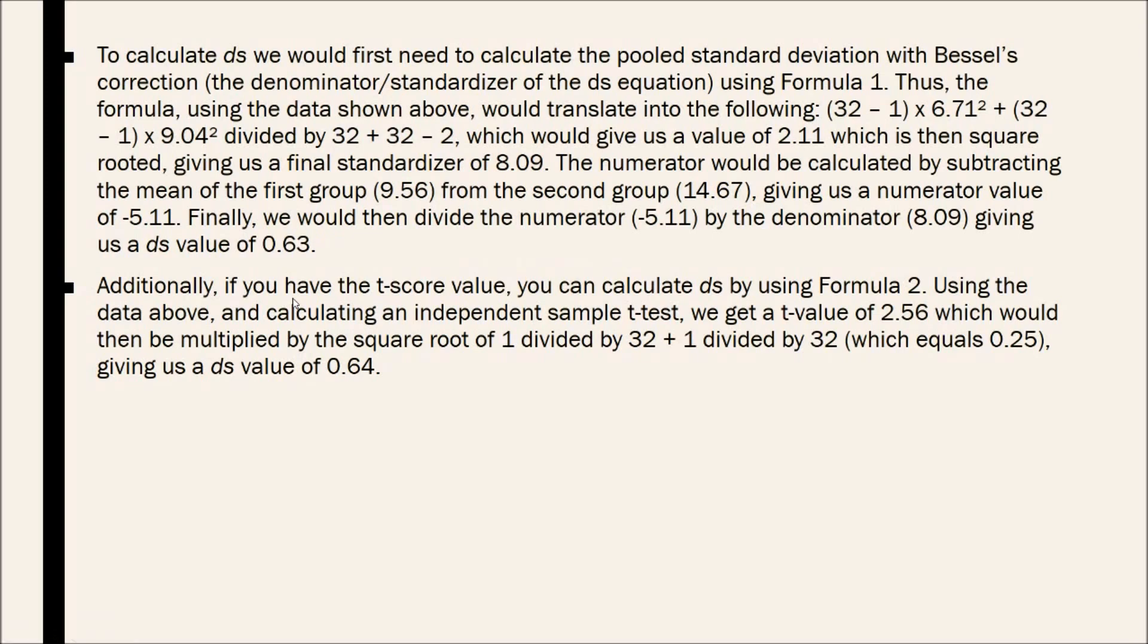The numerator will be calculated by subtracting the mean of the first group, 9.56, from the second group, which is 14.67, giving us a numerator value of negative 5.11. Finally, we would then divide the numerator, negative 5.11, by the denominator or standardizer, 8.09, giving us a DS value of 0.63. I'll get to the interpretation of the effect sizes towards the end of the tutorial.